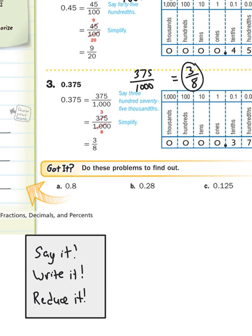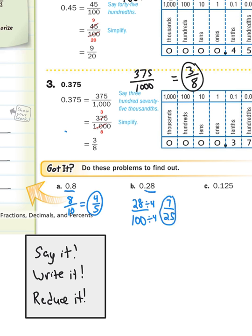Alright, let's see how you did. I'm going to do A, B, and C — you should already have them done and be checking your answers. Fix any that are wrong. First one: say it — eight tenths; write it — eight tenths; reduce it — four fifths. Second one: say it — twenty-eight hundredths; write it — twenty-eight hundredths; reduce it — divide by four — seven twenty-fifths. And in C: say it — one hundred twenty-five thousandths; write it — one hundred twenty-five thousandths; reduce it — one eighth. If you had them all right, good, you're doing great. If not, make sure you fix your mistakes in your book before you move on.